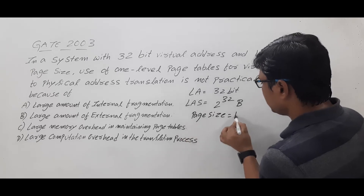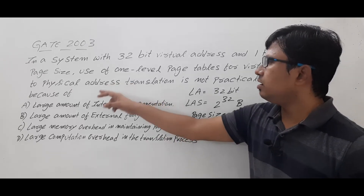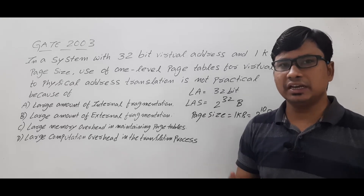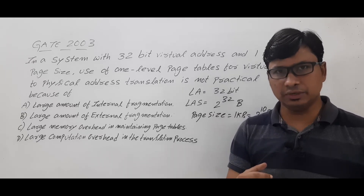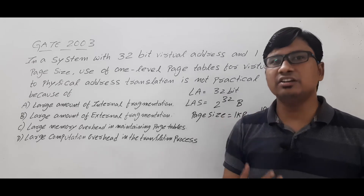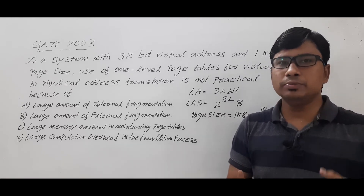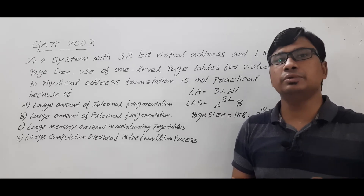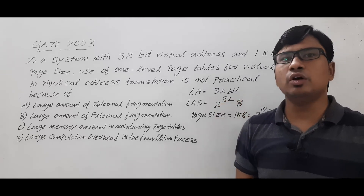Now look at option A: large amount of internal fragmentation. We have two types of memory allocation — contiguous and non-contiguous. In contiguous we have fixed size partitioning and variable size partitioning. In fixed size partitioning we have issues such as internal fragmentation, external fragmentation, restriction on degree of multiprogramming, and restriction on process size. In variable size partitioning, only external fragmentation remains.